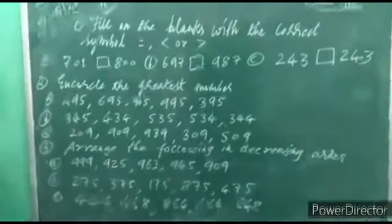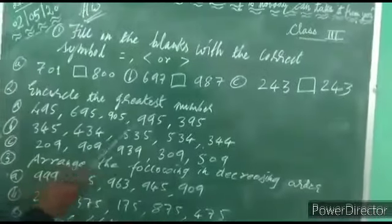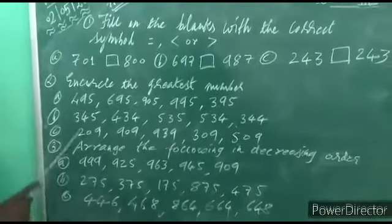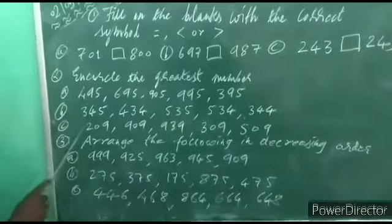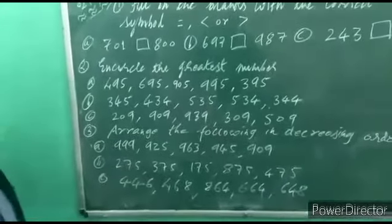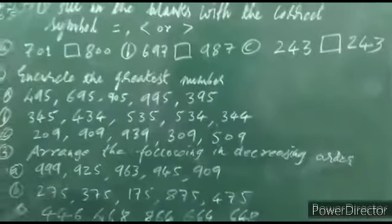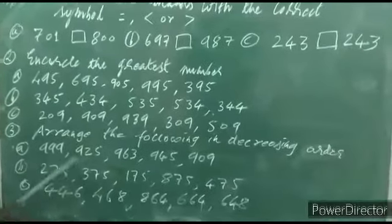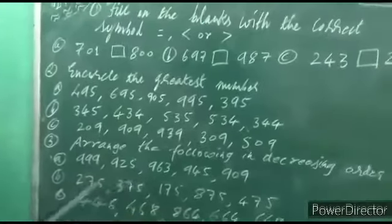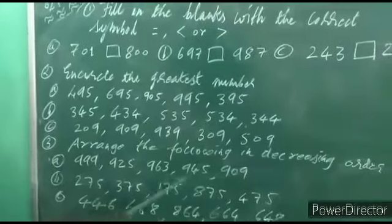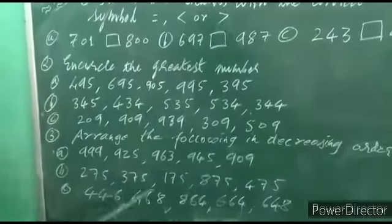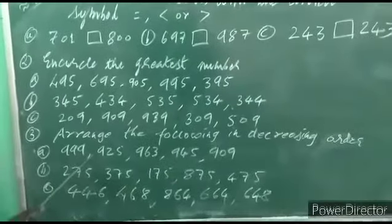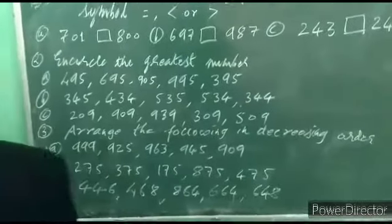Now, encircle the greatest number — among 5 numbers, you have to select the greatest number first and then circle it. For examples B and C, do the same thing. Next: arrange the following numbers in decreasing order — decreasing means from greatest to smallest. All 5 numbers given are 3-digit numbers, so properly compare their place values and arrange them.